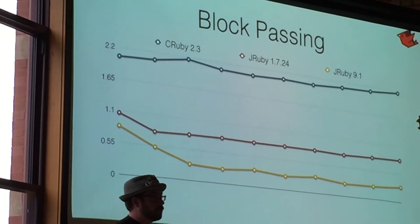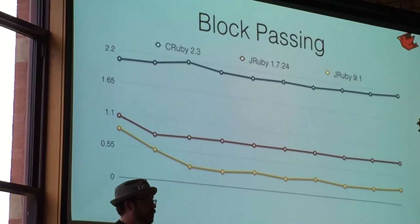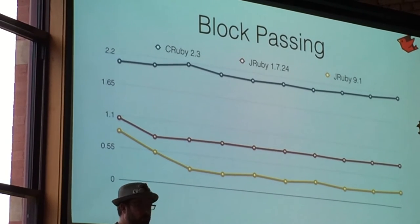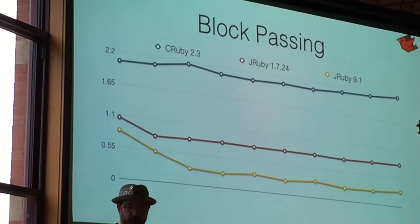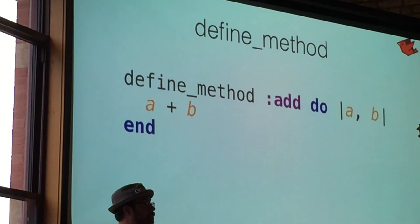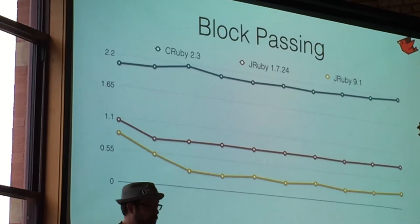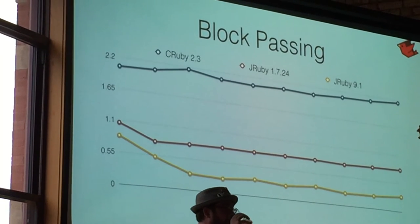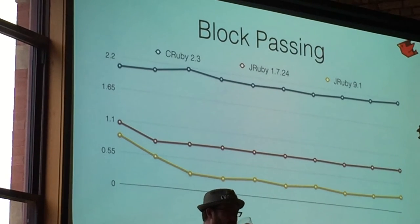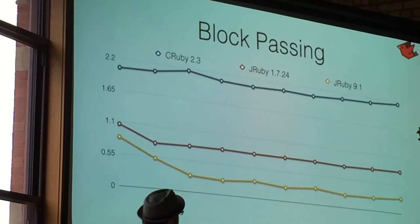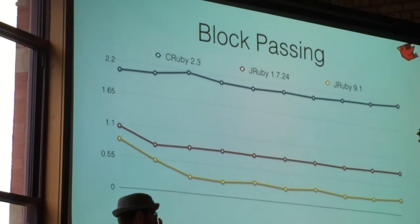And this is a zero scale, so we're getting down here to like 0.25 seconds for a benchmark that takes CRuby 2 seconds to run. Trimming out all of that extra overhead — that's essentially what we want to do in the pipeline. Don't do work we don't need to do. When you're running these benchmarks, are you timing it from the command line? Or are you including the JVM start time and all that?